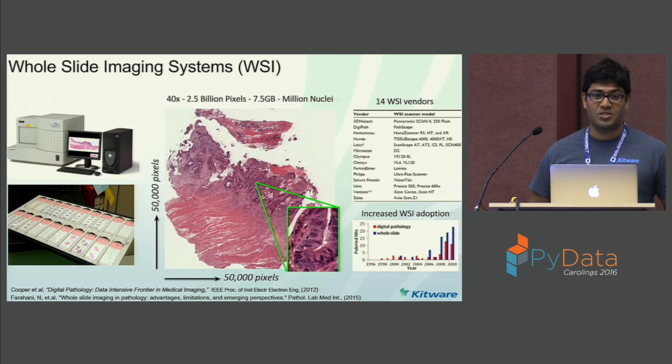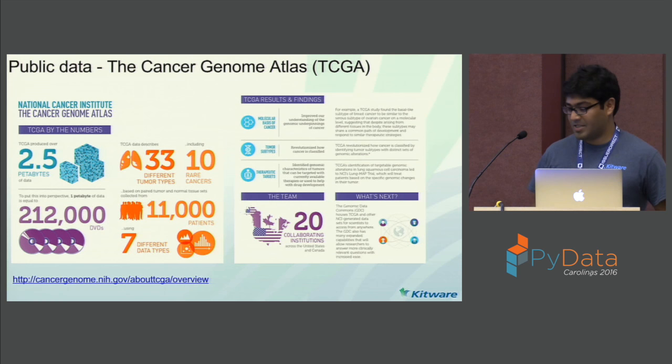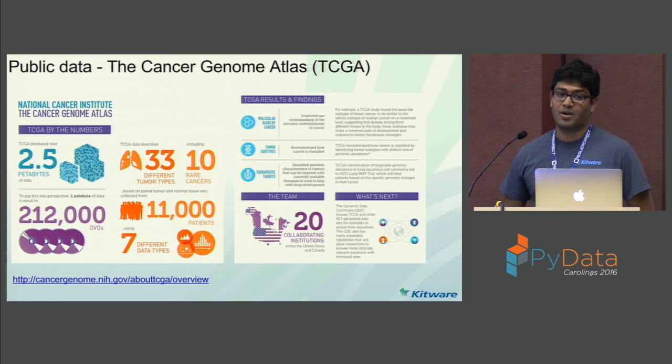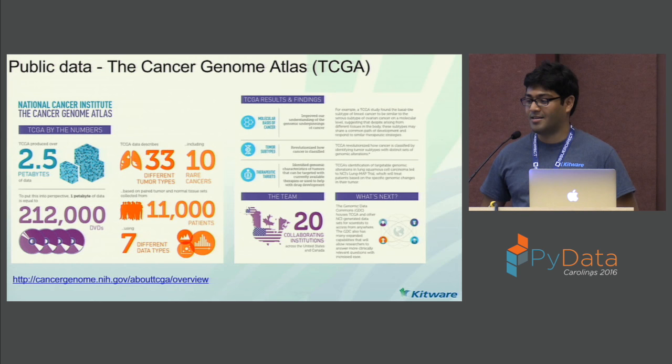There are over 10 whole slide image system vendors right now, and if you look at PubMed trends, there is an increased interest in whole slide imaging currently. One of the biggest public data resources for this is the Cancer Genome Atlas, spearheaded by the National Institute of Health. It contains data for 33 different types of cancers from 11,000 patients, seven different kinds of data, and that's all in all about 2.5 petabytes of data.